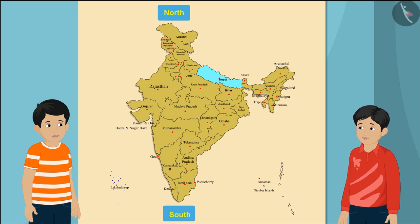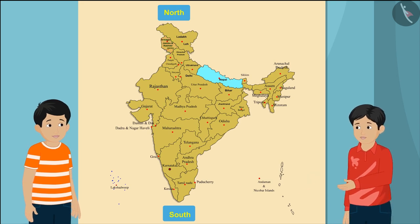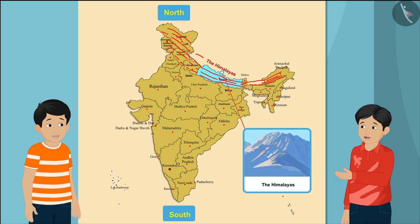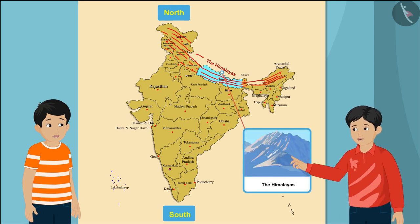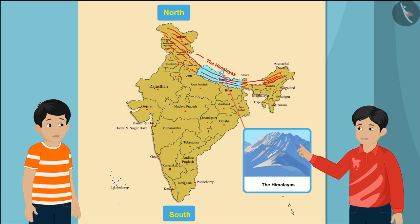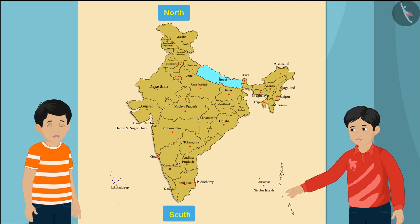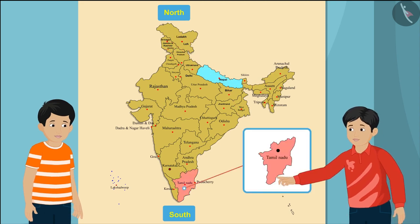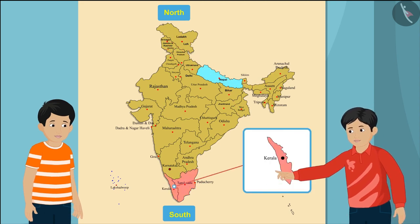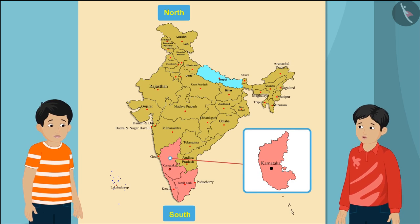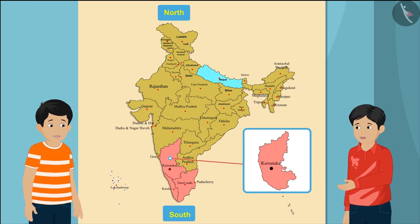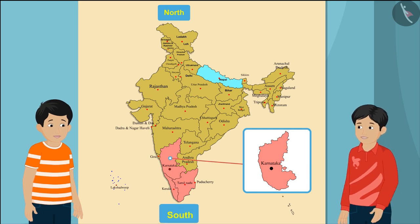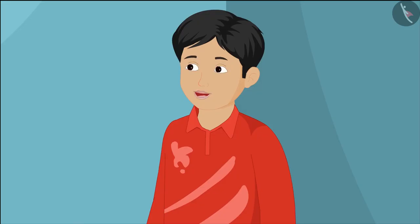Jammu and Kashmir is in the northern part of India. Not only this, the vast Himalayan mountain range is also in the northern part of India. Tamil Nadu, Kerala, and Karnataka are all states in the southern parts of India.